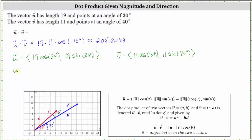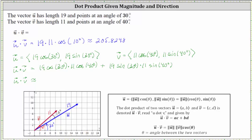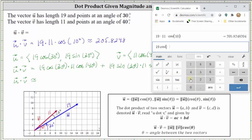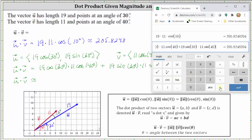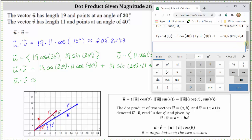Using the component form, vector u dotted with vector v is equal to 19 cosine 30 degrees times 11 cosine 40 degrees, plus 19 sine 30 degrees times 11 sine 40 degrees. Going back to the calculator and entering this expression, you can see we get the same result: 205.8248.